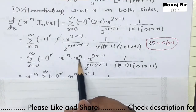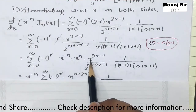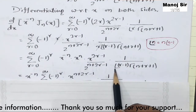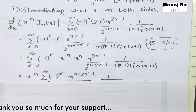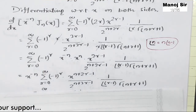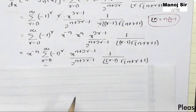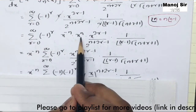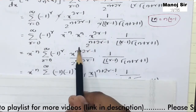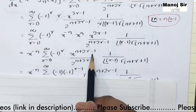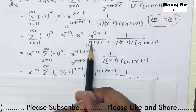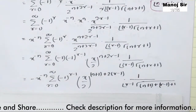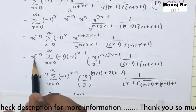Taking x^{-n} outside the summation: the remaining expression contains x^{n+2r-1} in the numerator and 2^{n+2r-1} in the denominator, giving (x/2)^{n+2r-1}. The denominator also has (r-1)! and Gamma(n+r+1). This simplifies further in the next step.